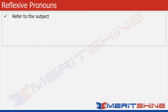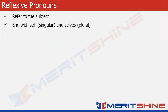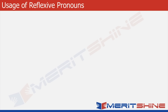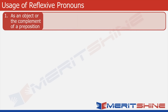Reflexive pronouns refer to the subject of the sentence and end with 'self' for singular pronouns and 'selves' for plural pronouns. Dhoni shot himself on the foot. They served themselves last. It is also used as a complement of a preposition or as an object of a sentence.